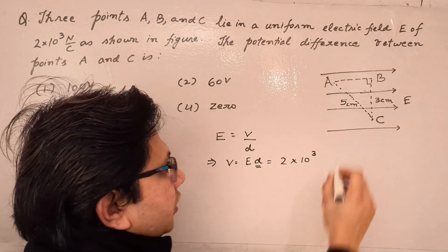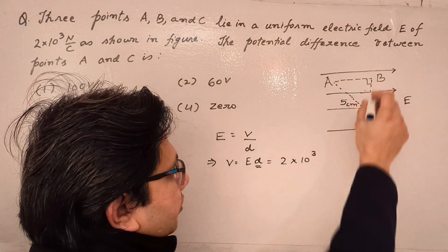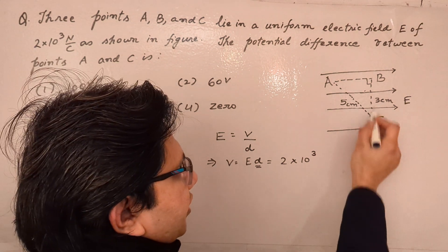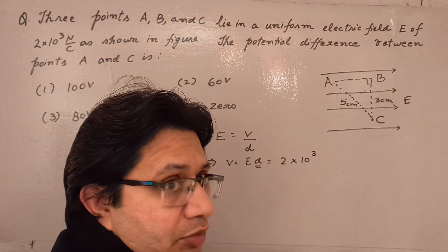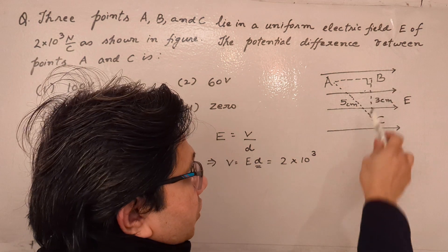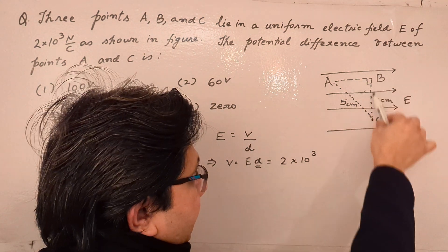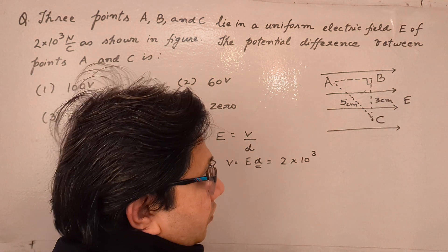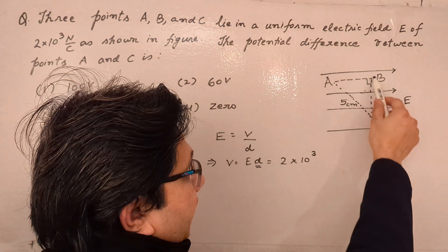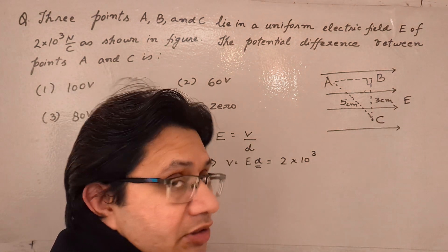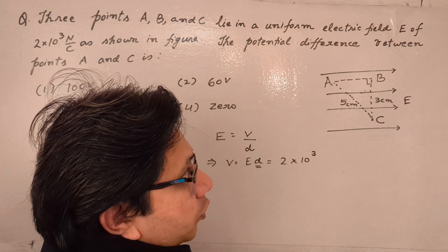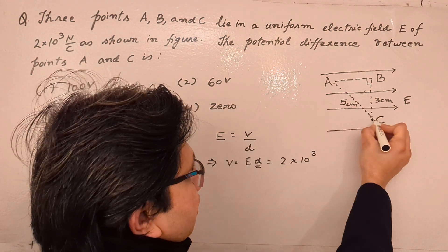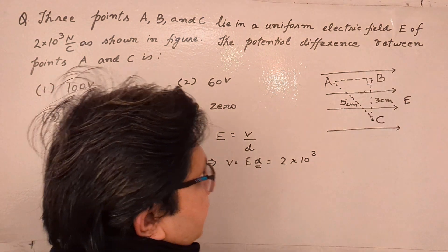Along the direction of the electric field, the relevant points are A and B. We can also see that the potential at point C and the potential at point B are the same, because the line connecting B and C is a vertical line — exactly perpendicular to the electric field. When a line is perpendicular to the electric field, it is an equipotential surface.